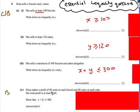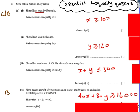Then the fourth one, she makes a profit of 40 cents on each biscuit and 80 cents on each cake. Total profit is at least $160. So once again, just notice we've got cents and dollars here. So we need to make either everything into cents or everything into dollars.